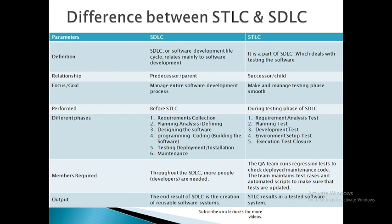What are the phases of SDLC? There are 6 phases of the Software Development Life Cycle: Requirement Gathering, Planning, Designing, Coding, Testing, and Maintenance. In the fifth phase — Testing — we will start our STLC life cycle.